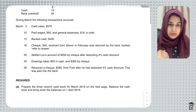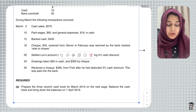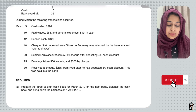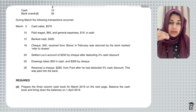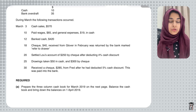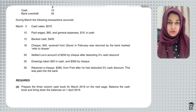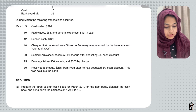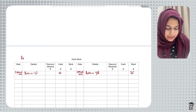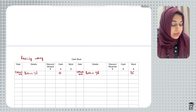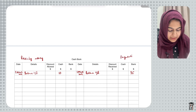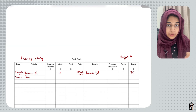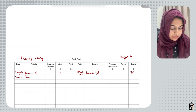Now we'll solve all the transactions that occurred during March. Cash sales of $570 on 3rd March — whenever you're selling goods, the sales account is credited. You're receiving cash in exchange for the goods, so whenever you're receiving money, you record that on the debit side of the cashbook. I write here, 3rd March, sales, and in the cash column I write $570.